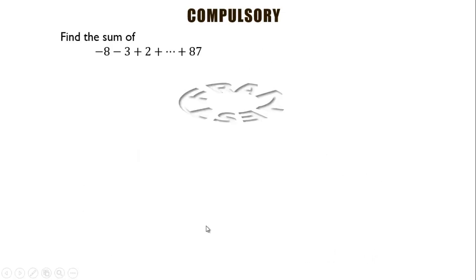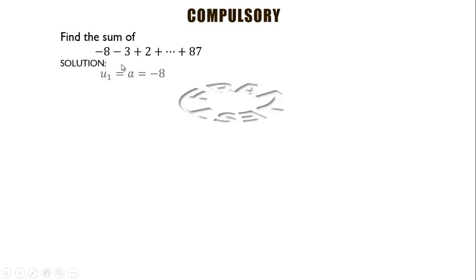Now we have another question on sequences and series. Let's begin by examining the series. We have to find the sum of a given series. We know this is a series with a first term a = −8, a last term of 87, and a common difference of 5.